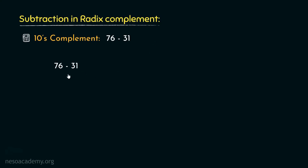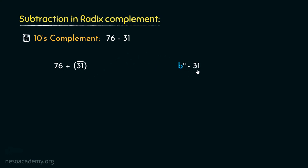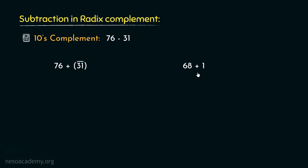Basically, this subtraction would be performed as the addition between 76 and minus 31, or the negative inverse of 31. Unlike the previous session, this time we are supposed to use the formula of radix complement — that is, b raised to the power n minus a, where a is the value 31. The 10's complement of 31 can be obtained if we know the 9's complement of 31 and add 1 to it. If we subtract 31 from 99, we obtain the 9's complement value 68. Adding 1 to it, we obtain the 10's complement value of 31, which is 69.